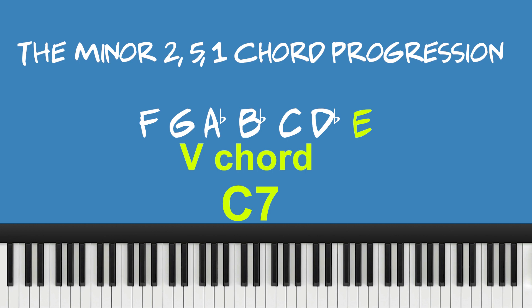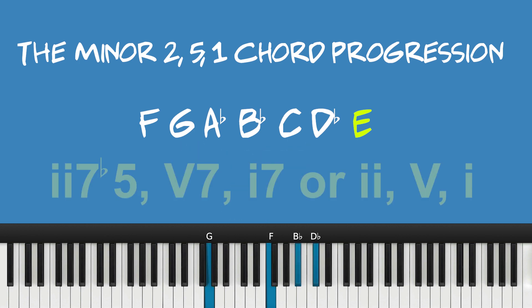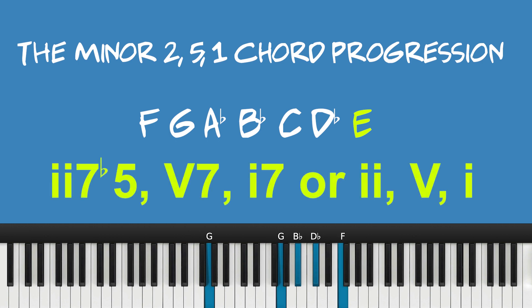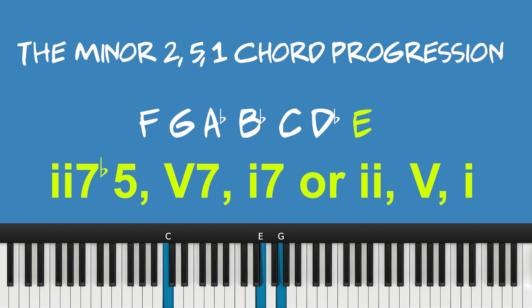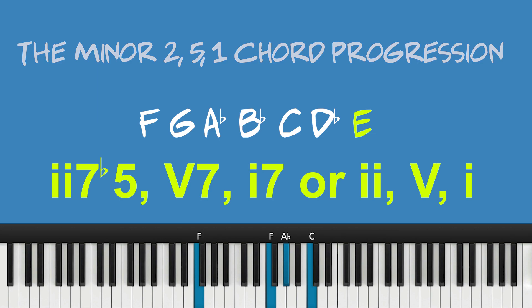The minor 2-5-1 chord progression in any key is typically: your two chord — a minor seven flat five — then some type of dominant five chord, and then we'll play a regular seven chord to a minor chord as the one.